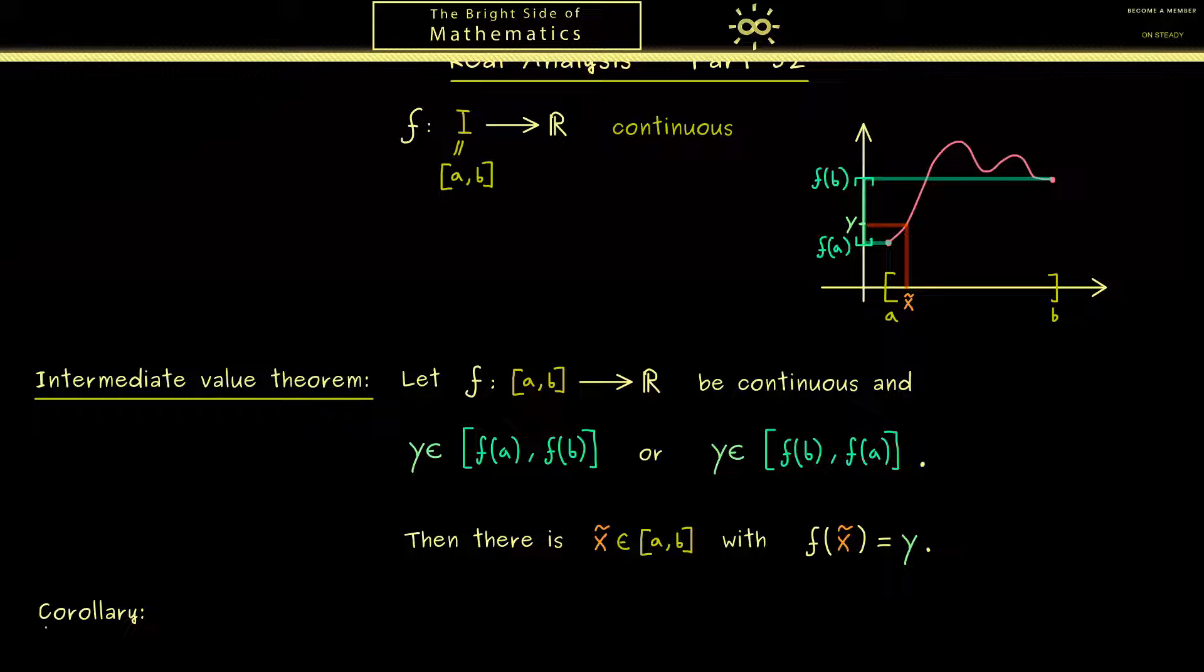But before we do that I present you a corollary you really should remember. It tells us that the image of the interval [a,b], denoted with square brackets, is also an interval. More concretely it's the interval that starts with the minimum of the function f and goes to the maximum of the function f. Therefore all the intermediate values are also hit.